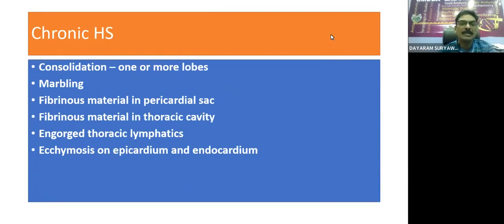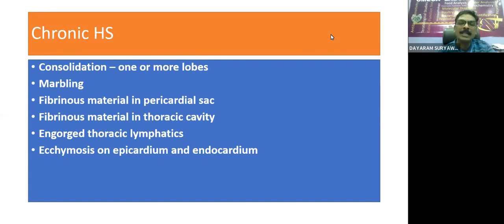In chronic HS, these types of cases are more predominantly observed in field conditions. The animals show long-standing coughing and salivation. When doing post-mortem of such animals, we get consolidation of whole lobes of the lungs. Marbling can be observed. Fibrinous material can be present in the pericardial sac, and sometimes it gets attached to the epicardium. Fibrinous material can also be present in the thoracic cavity, enlargement of the thoracic lymphatics, and ecchymosis on the epicardium and endocardium.